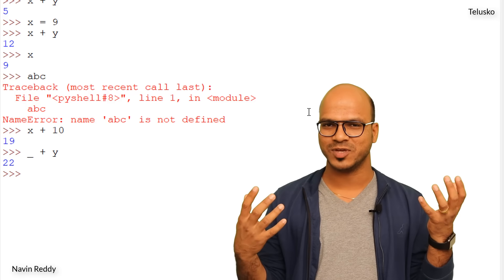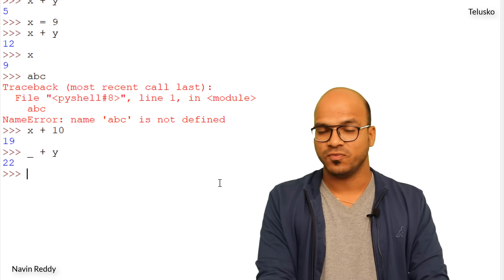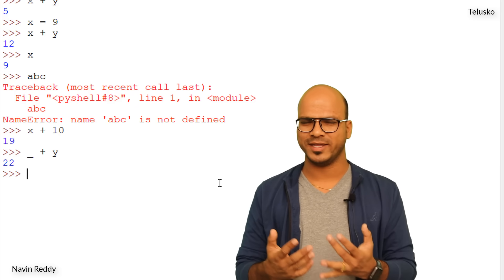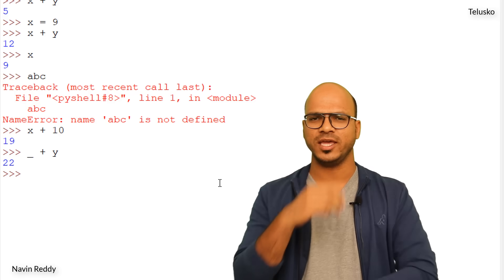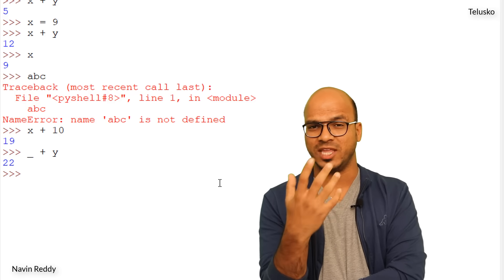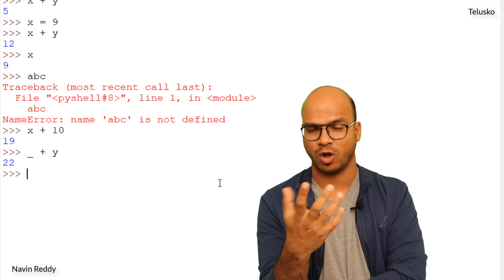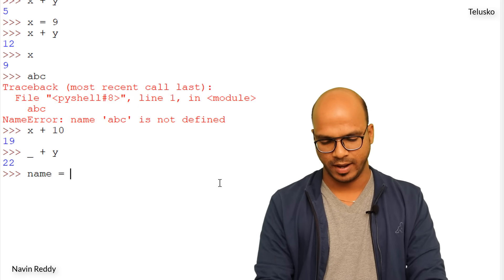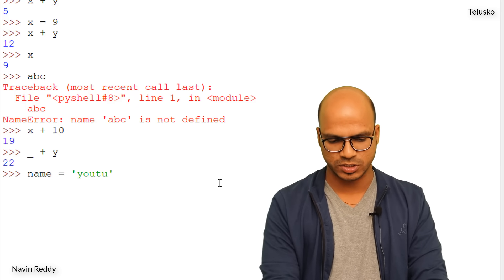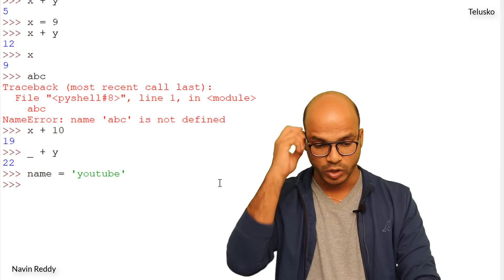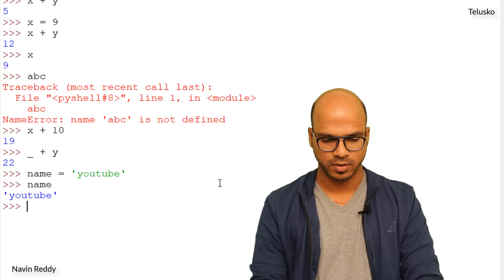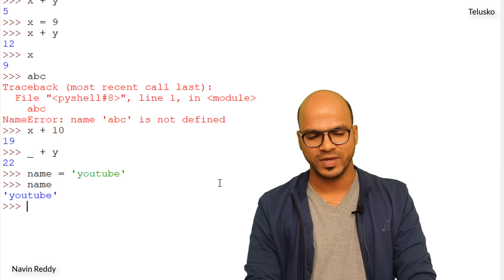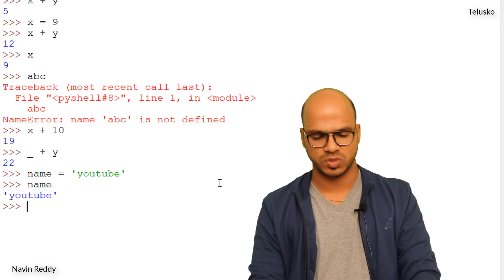We can use variables for numbers — float or integer. What about strings? Can I use a variable with a string? Let's try — name equals 'YouTube'. Press Enter, it works. If I print name, we get YouTube. So string variables work perfectly as well.